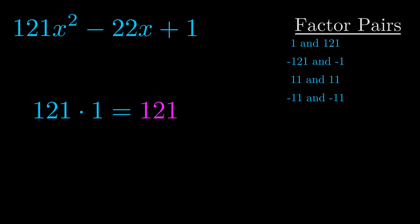The b value is the coefficient on the x term. That's the middle term, the one that we haven't done anything with yet. And really this is the only factor pair that we need.